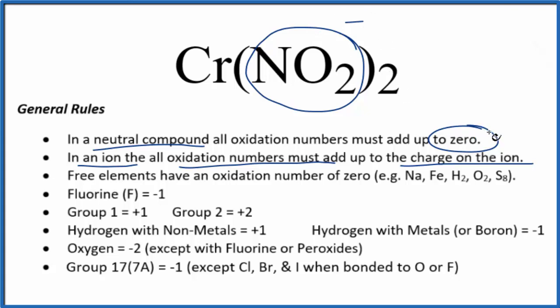Since we have two of them, and everything has to add up to zero, because of that, the oxidation number on the chromium here has to be plus 2 for everything to add up to zero. 2 times minus 1, that's minus 2, plus 2, that gives us zero.